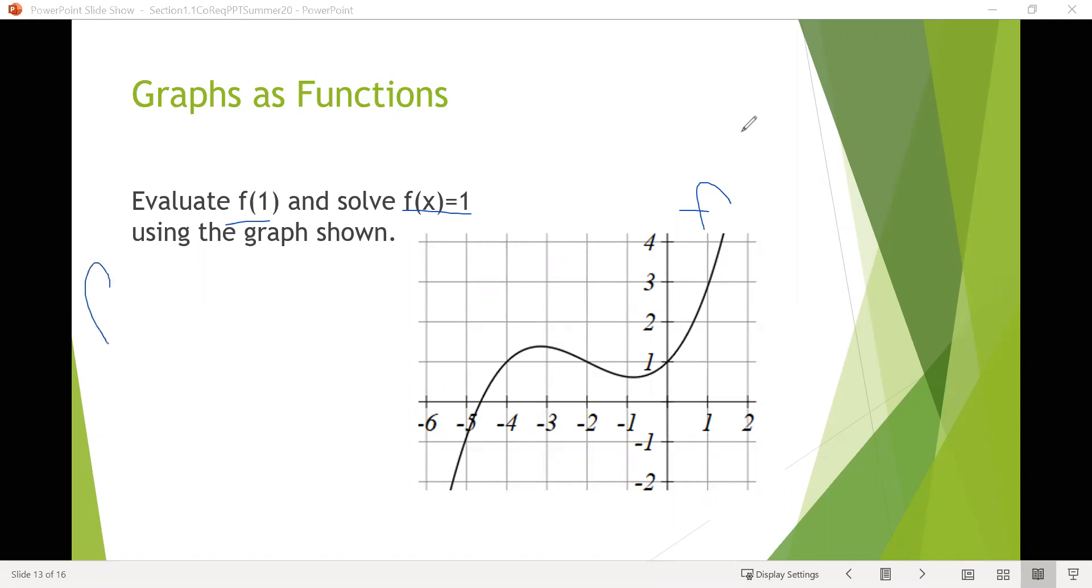For the first part, when we have f of 1, notice they've given us the part on the inside, inside the parentheses. That means they've given us the input and they want us to find the output. So we'll go along our horizontal axis to where there's 1, and then look for the corresponding output. We go up to the graph and it looks like the output there is 3. So f of 1 equals 3.